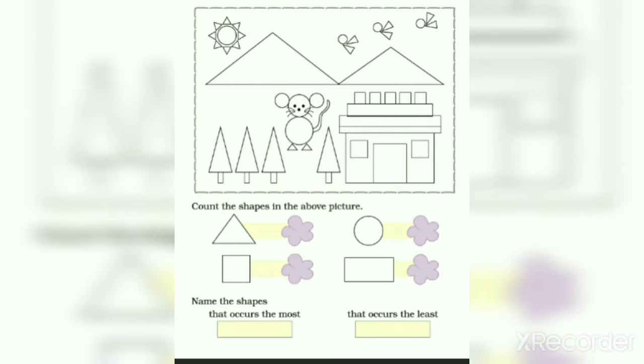Let me explain the examples. As you can see we have a sun, mountains and a house and trees and a cat. So children let us count the shapes and write.